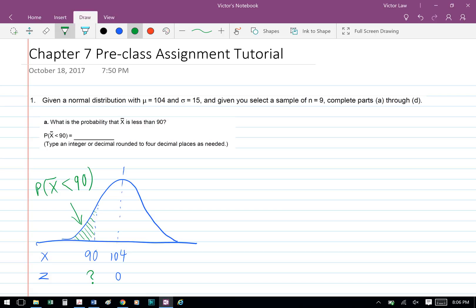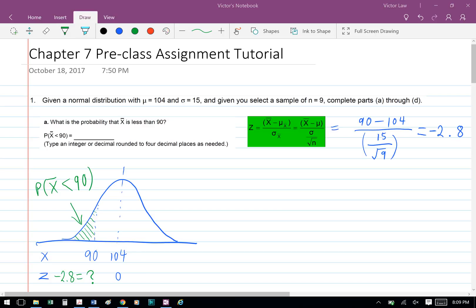First, to find the probability of X less than 90, we need to find Z first. To find the Z value from samples, we use the formula X bar minus mu over standard deviation divided by square root n, which equals 90 minus 104 over 15 over square root 9, and we get negative 2.8.